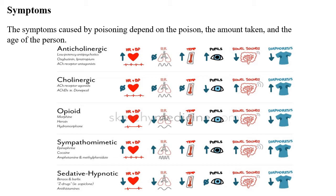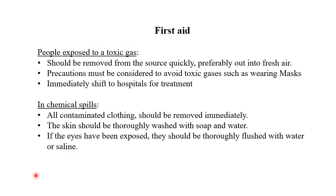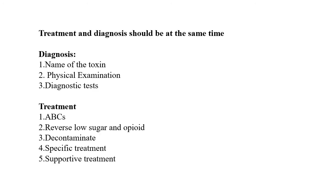Based on the symptoms, we can find out the type of poison and begin treatment. If exposed to toxic gas, remove the individual from the area and hospitalize them with oxygen. In case of a chemical spill, the area and eyes should be properly washed and cleaned. Since we don't have much time in poisoning cases, diagnosis and treatment can be done simultaneously.